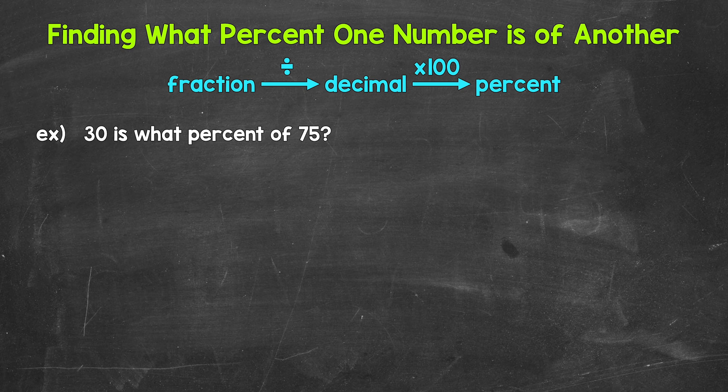Let's jump into our example where we have 30 is what percent of 75. We're going to divide and then multiply here. And one way I like to set these up and think through these is to go from a fraction to a decimal to a percent.